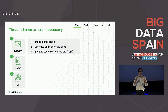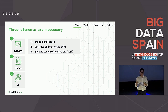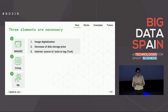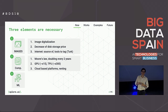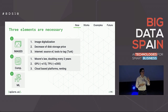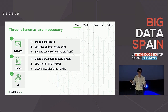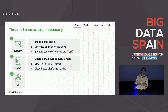First, images digitalization — we have digitalized images, we are not in the 90s with Polaroid cameras. Second, the decrease in disk storage price; as you may know, images are heavy files. The internet is a great source, and we have tools to process these images. Also, Moore's Law: every two years computing power doubles. We have new processors, GPUs, TPUs that make all these things faster. And we have cloud-based platforms, so you can rent and don't have to spend a lot of money buying expensive hardware.